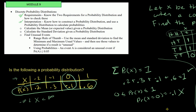Next we'll cover calculating the mean and standard deviation of a probability distribution function, and finding unusual events. The range rule of thumb will be saved for the module 9 video on binomial distributions. For this video we'll use probabilities to identify unusual events. You need to know both methods — the exam will specify which one to use.